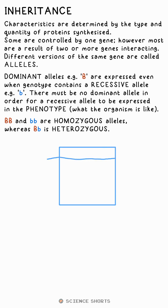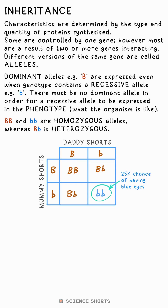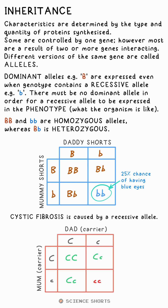We can use a Punnett square to predict the probability of a certain phenotype. My parents have brown eyes, but they both have heterozygous alleles for eye color. There are three different outcomes of these combining, with a 25% chance of making me — that's little B, little B. Even if two parents don't have cystic fibrosis, they could still be carrying the recessive allele, so their child could have the disorder.